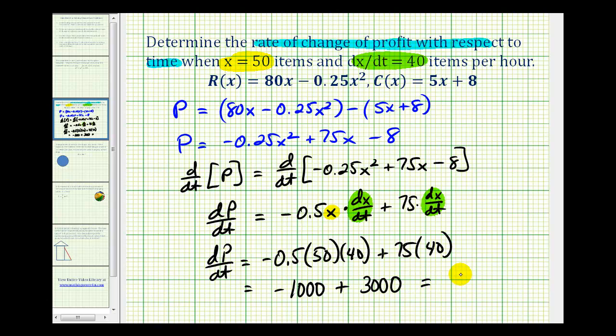So this is equal to 2,000, but we're measuring the rate of change of profit with respect to time. So the profit is increasing at $2,000 per hour when x is 50 and dx/dt equals 40.